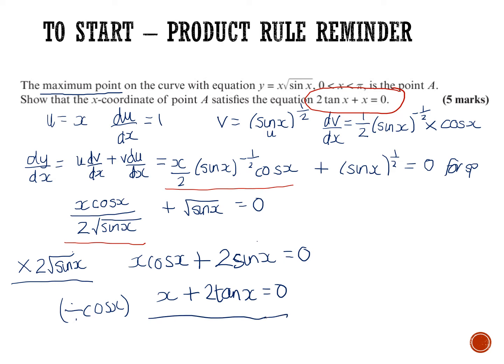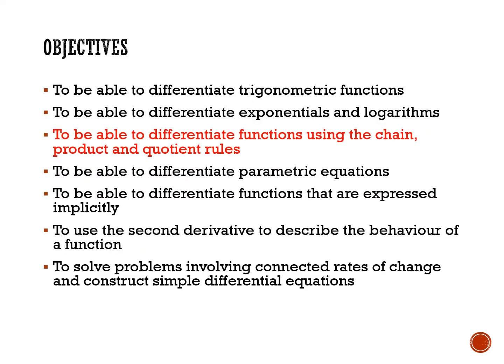That was a complicated product rule because of the square root of sine x. When manipulating those, write them as square roots and work out what you need to do to get the required 'show that' result. We've now done the chain rule and the product rule, and we're moving on to the quotient rule. The remaining objectives will be picked up again in September.